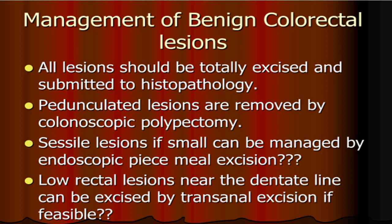For operative resection, low rectal lesions near the dentate line can be excised by trans-anal excision if feasible. The patient is placed in the lithotomy position, dilatation of the anal orifice is performed to dilate the sphincters, and the polyp is pulled outside the anus and excised, with the defect then sutured.